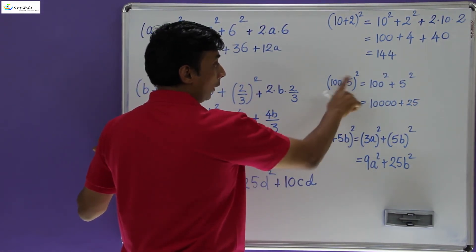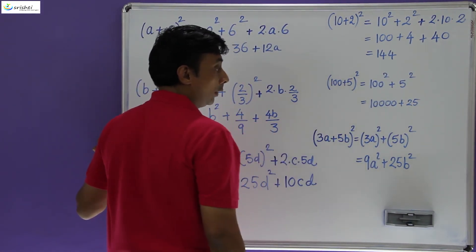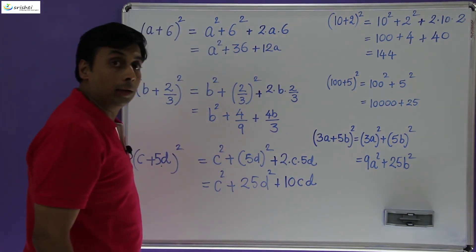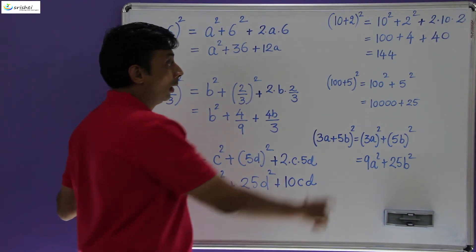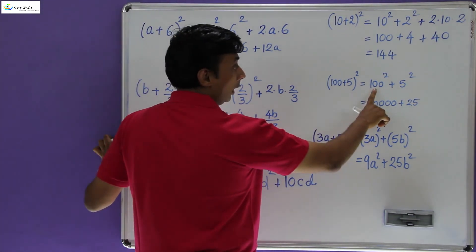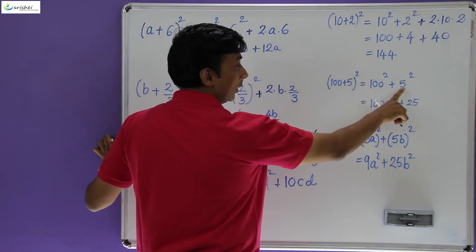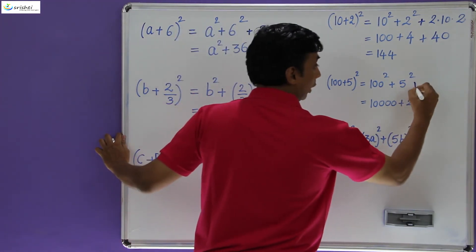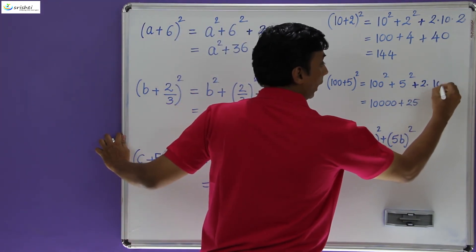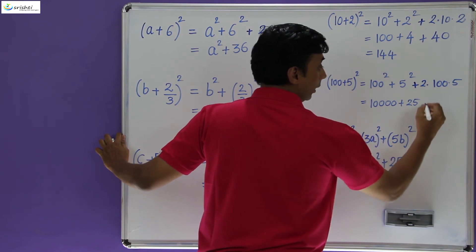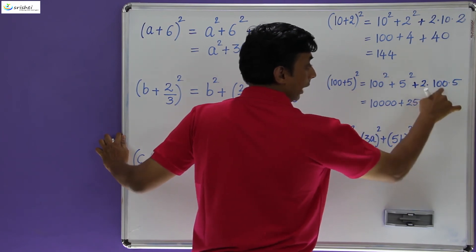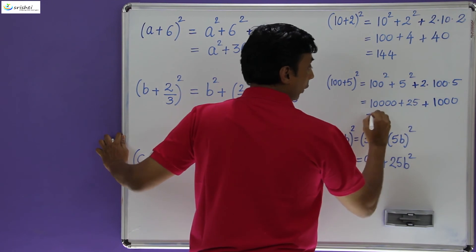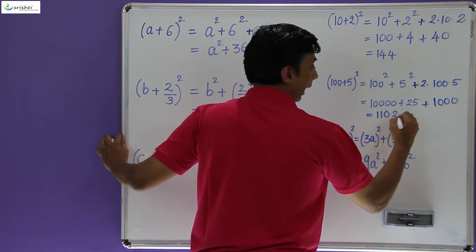Now let's take (100 + 5)², which is 105². If you calculate 105², it will be 11025. But according to the misconception, we wrote 100² + 5² = 10000 + 25. We are missing the 2ab term: 2 × 100 × 5 = 1000. So 10000 + 25 + 1000 = 11025, and the answer is very accurate.